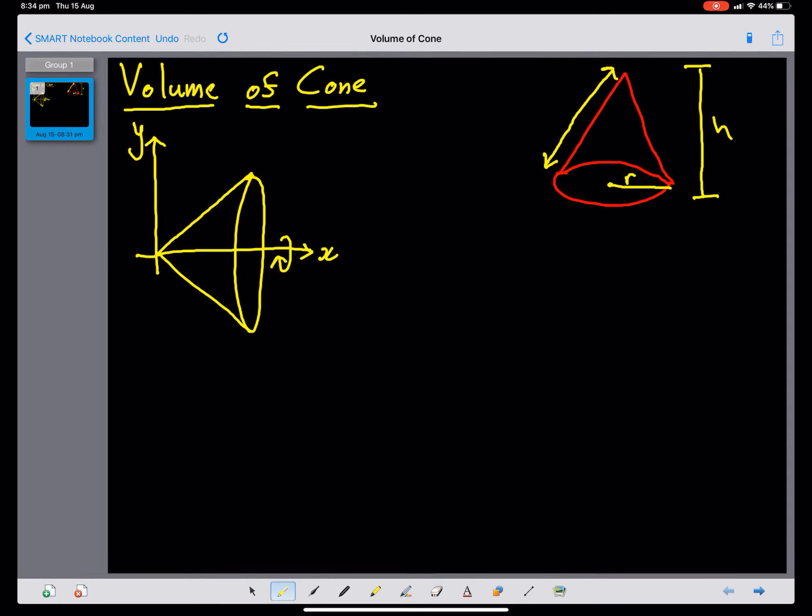You should know that the volume of a rotation about the x-axis is multiplied by pi. We have the limits of integration. We need to square our function, or our x-axis, and we integrate with respect to x.